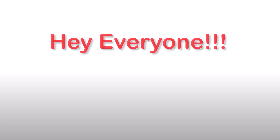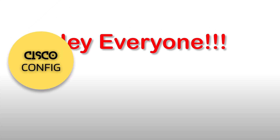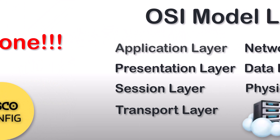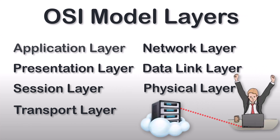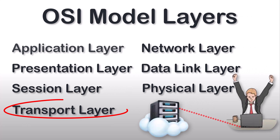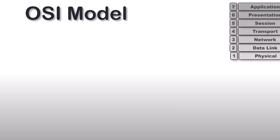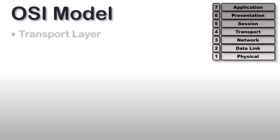Hey everyone, welcome back to the channel Cisco Config. In this video we are going to discuss the 4th layer of the OSI model, that is the transport layer. The transport layer's goal is service to service delivery.